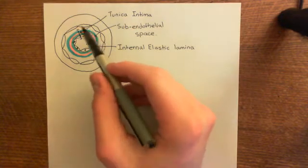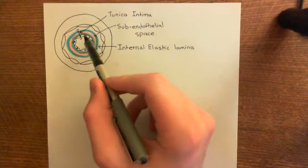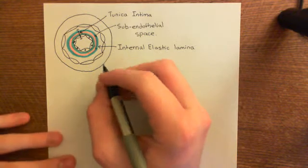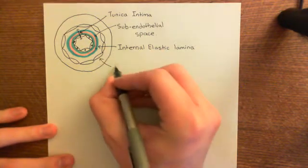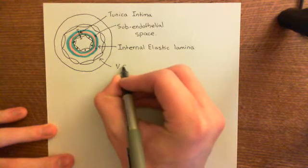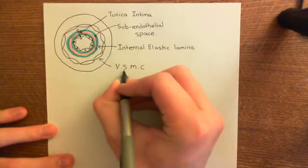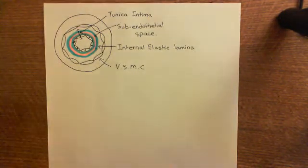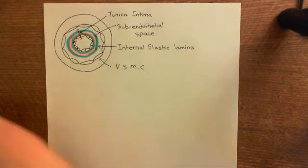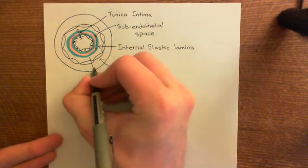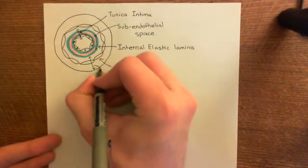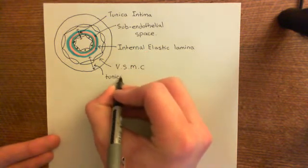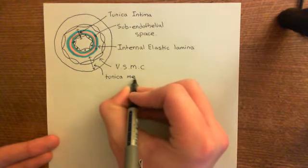You're not just going to have one ring of smooth muscle cells surrounding the lumen — you'll have multiple rings. These are vascular smooth muscle cells, often abbreviated to VSMC. Surrounding the vascular smooth muscle cell layer, which is known as the tunica media — tunica means layer, media means middle — so it's the middle layer.